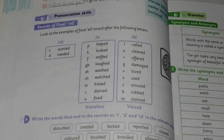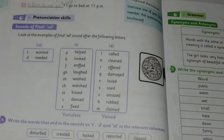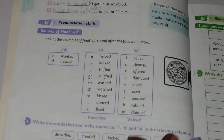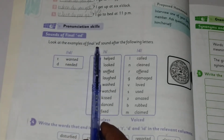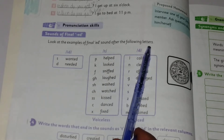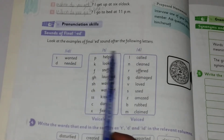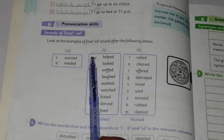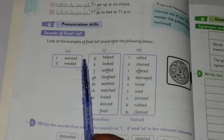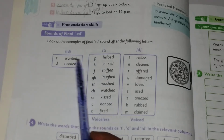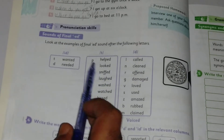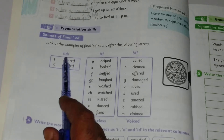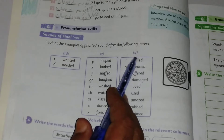Hello friends and students. This is Class 5 English new course. The question added in this new book is about sounds and pronunciation skills — specifically the sounds of the final '-ed'. Look at the examples of the final '-ed' sound after the following letters: '-id', '-t', and '-d'. We'll learn where and when we have to pronounce '-ed'.